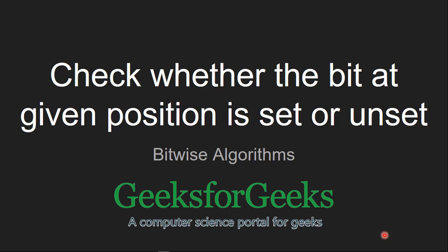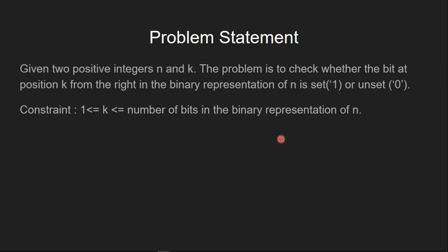Today we are going to see another problem: check whether the bit at the given position is set or unset. The problem statement is, given two positive integers n and k, the problem is to check whether the bit at position k from the right in the binary representation of n is set or unset.